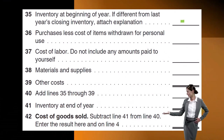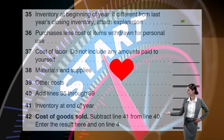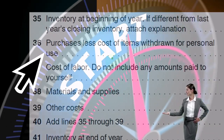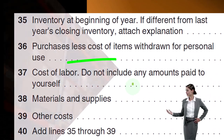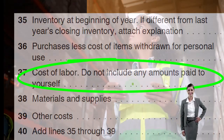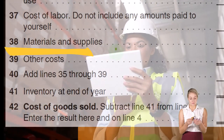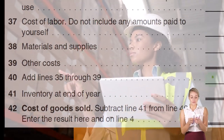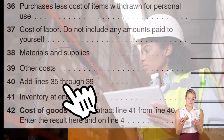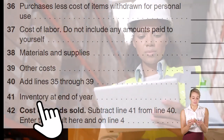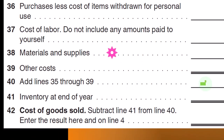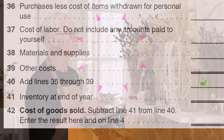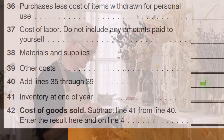Then you've got purchases less cost of items withdrawn for personal use, cost of labor — do not include any amounts paid to yourself — materials and other supplies, other costs, and then you add them up. If you're just buying and selling inventory, you're a merchandising company and inventory is simpler — just purchases. But if you're manufacturing inventory using a process cost or job cost system, you have to deal with materials, supplies, work in process, and so on.